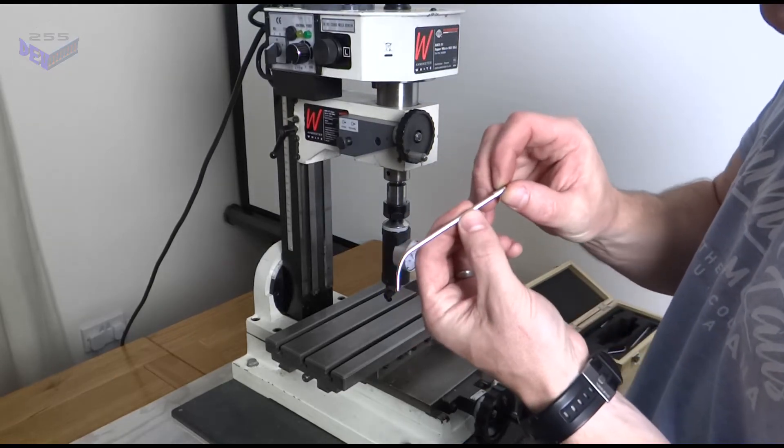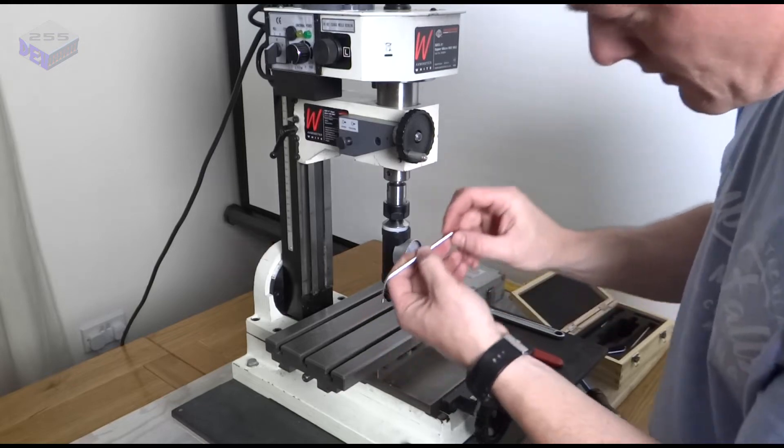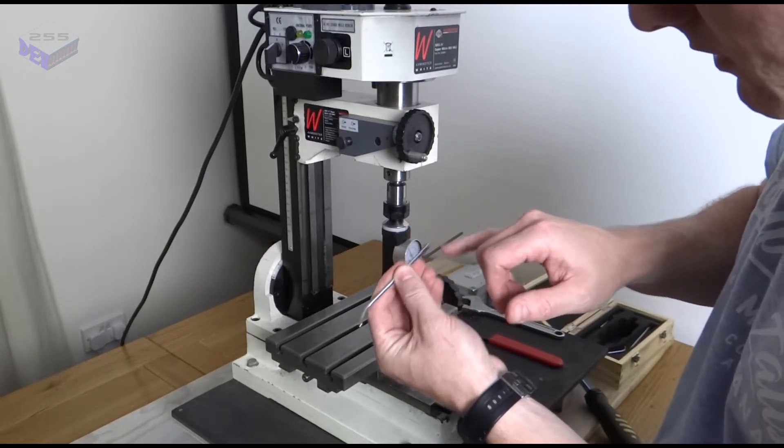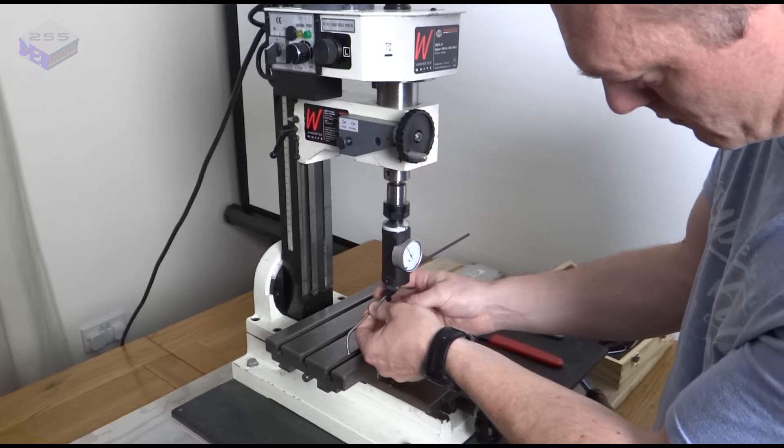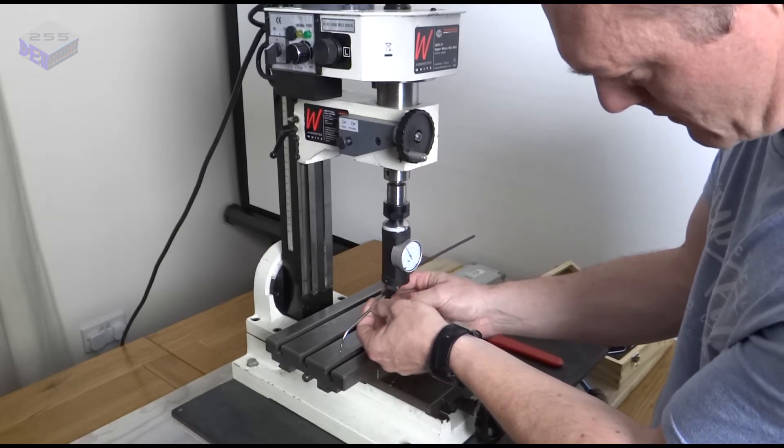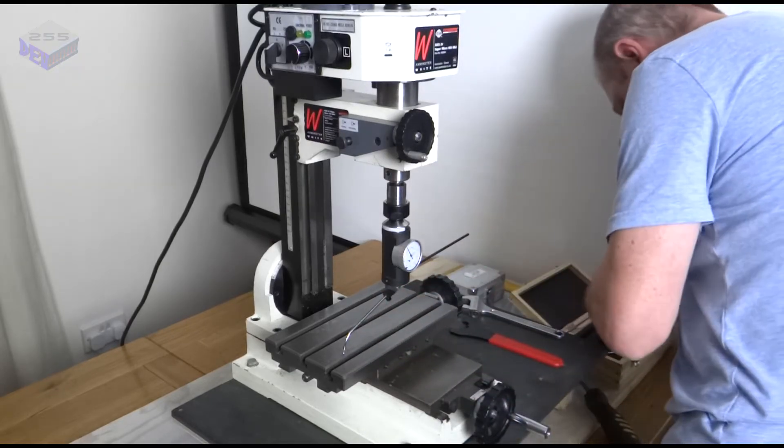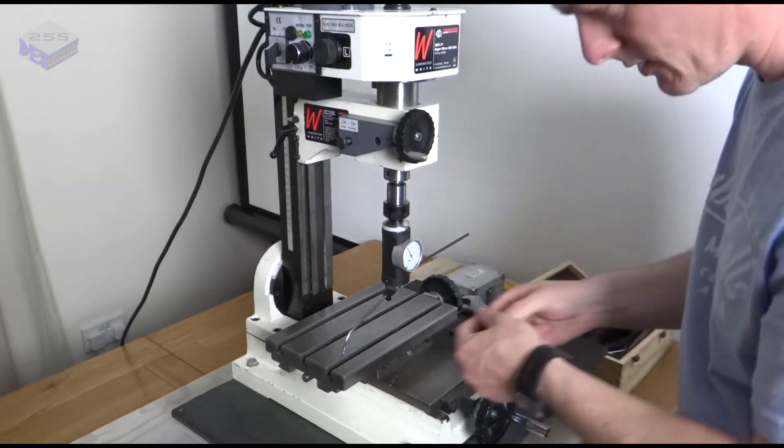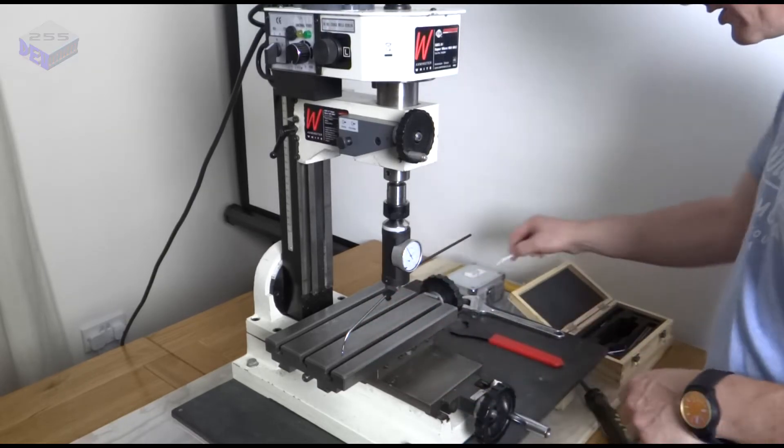Then I'm going to insert this arm into the dial indicator. It's got a flat on it and that will go towards the screw somewhere. Yep. There's a little spanner to tighten it up. You must make sure it's tight enough.